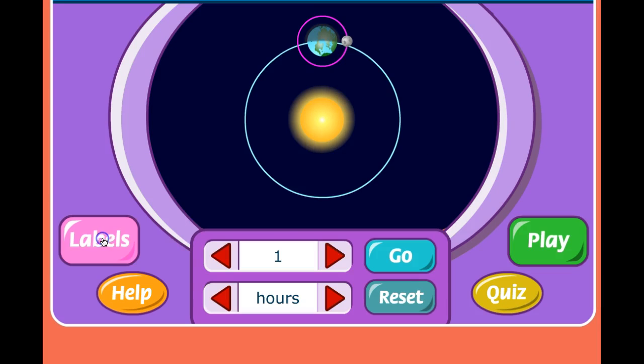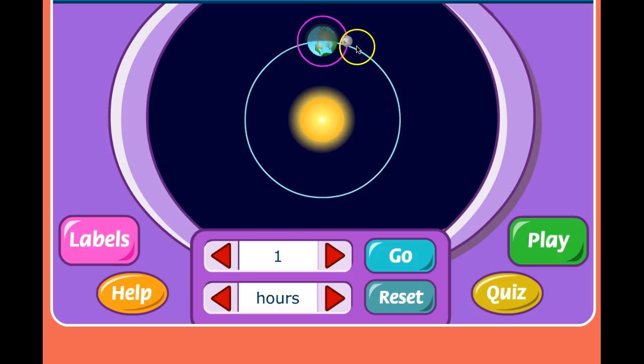I'm going to turn the labels off now. Now, the sun, earth, and moon are never, ever this close together. The learning tool puts them this close together so that we can see what happens when they move around each other.